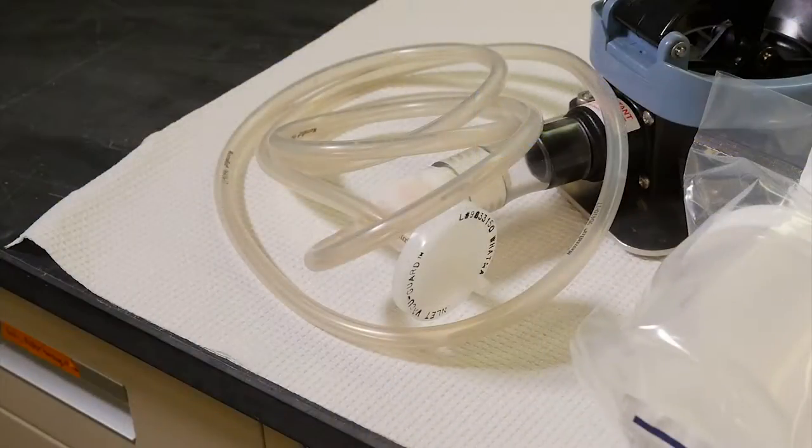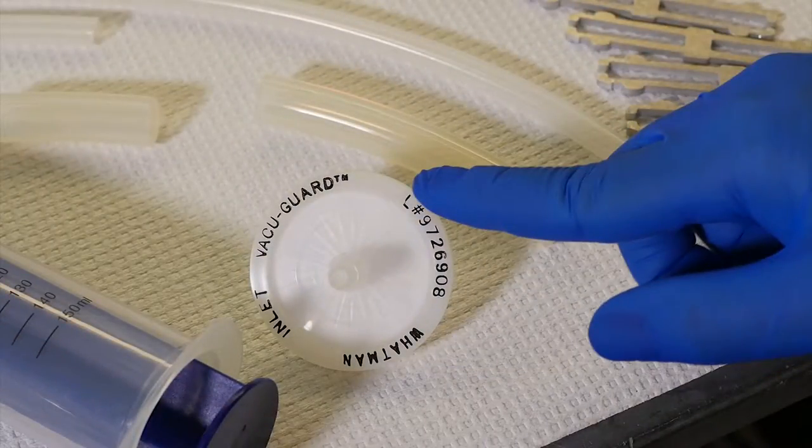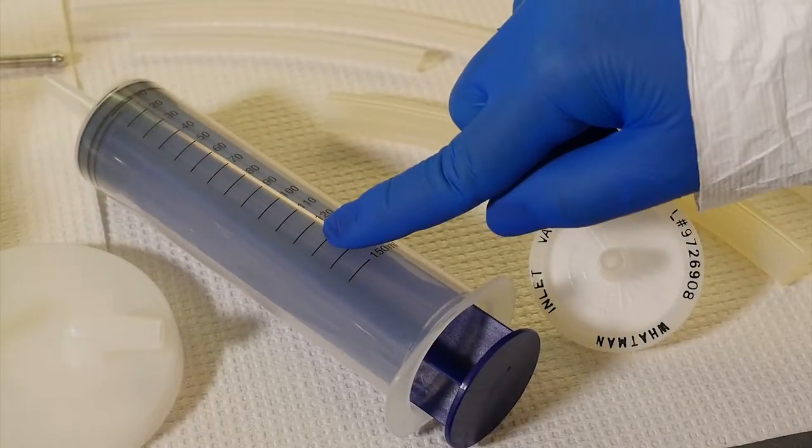Additional components include very long small diameter tubing for connecting the collection cup to the bilge pump, two vacuum guard filters to prevent cross contamination, and a syringe for eluent injection.